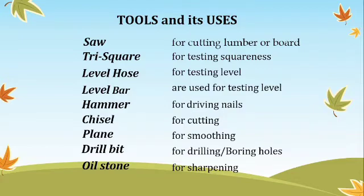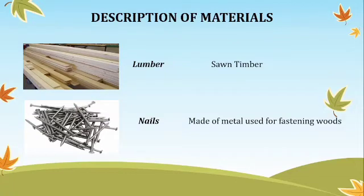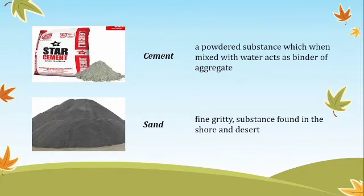The description of materials. The first material used in carpentry is lumber — it is a sawn timber. Next, nails — made of metal, used for fastening wood. Next, cement — a powder substance which, when mixed with water, acts as a binder of aggregate. Next is sand — fine gritty substance found on the shore and desert.